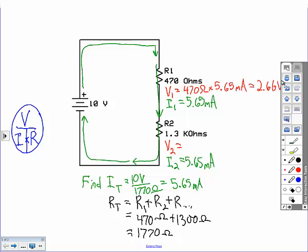We use the same calculation for voltage drop on resistor number two, except it's going to be 1,300 ohms times 5.65 milliamps, which gives us 7.35 volts.